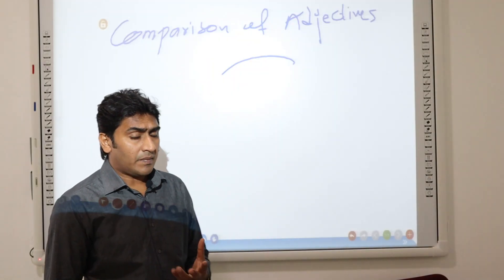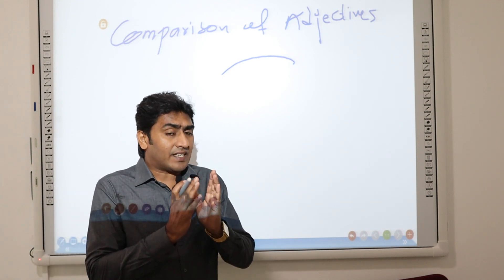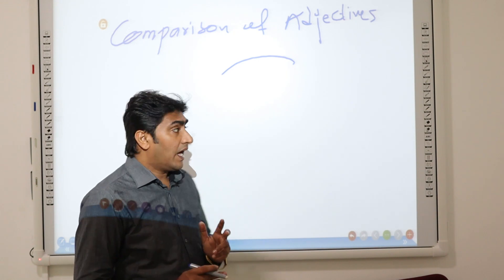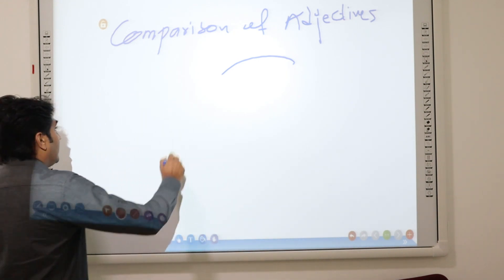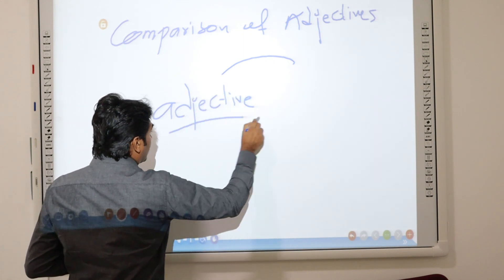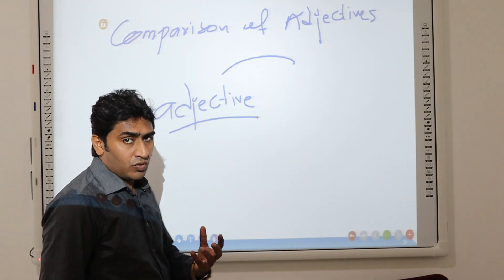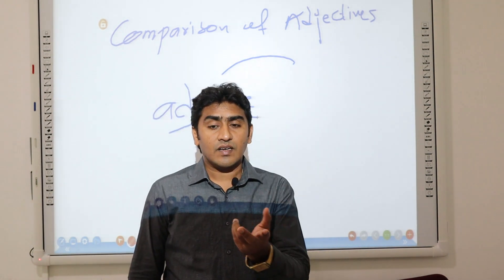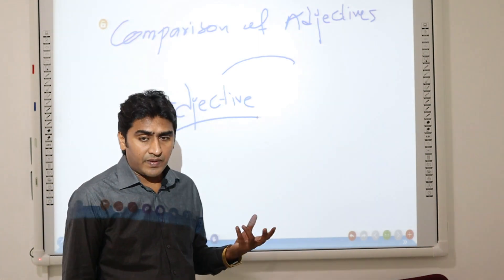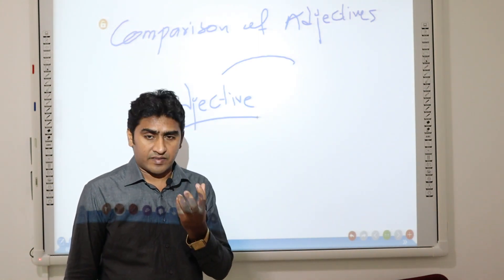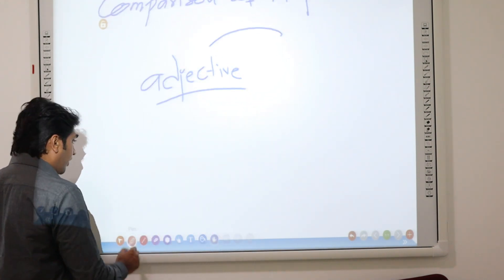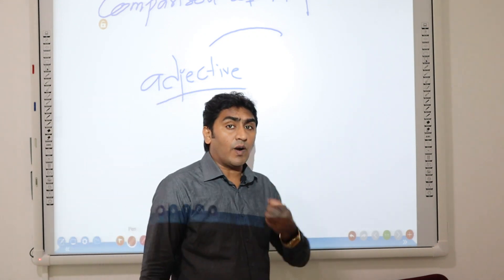So what is an adjective? What is an adjective? Comparison of adjectives. Adjective is a word that's used to describe a noun. We call them noun modifiers.